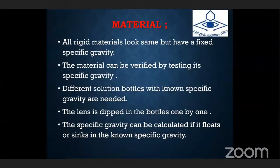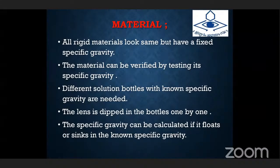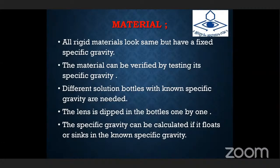Finally, we have material verification. All rigid materials look the same but have a fixed specific gravity. Specific gravity is the ratio of the weight in air of the material to the weight of an equal volume of water in air at the same conditions. By measuring specific gravity, we can determine the material type. Different solutions with known specific gravities are used; the lens is dipped into each solution one by one, and the specific gravity is calculated based on whether the lens floats or sinks. In this way, we can verify the material quality.